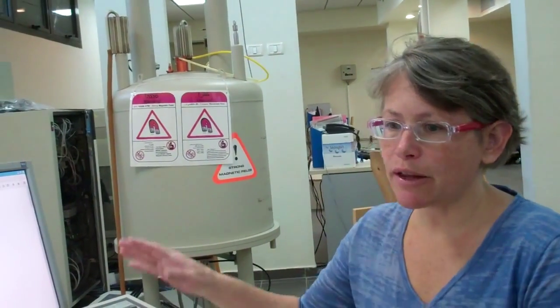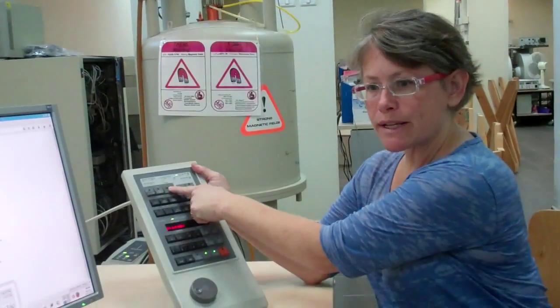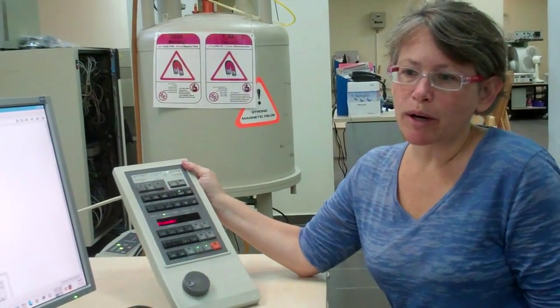We now go to step number 4 of the instructions, which is optional. There's another button here, labeled spin on-off. To spin the sample, I press the button and the green light will turn on.